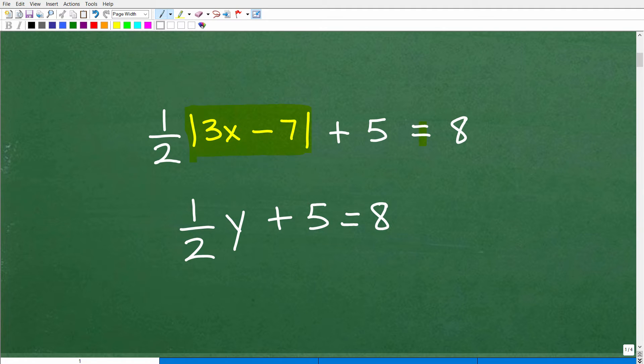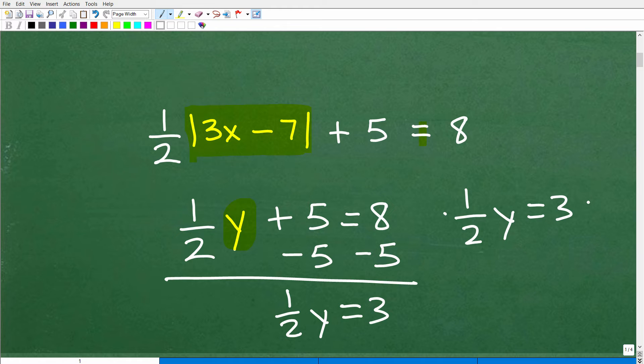So what you want to do here is isolate the Y on one side of the equation. So what would I do? I would subtract 5 from both sides of the equation. That would give me one half Y is equal to 3. And then here, we'll continue right here. One half Y is equal to 3. So to solve for Y, I can multiply both sides of the equation by 2. So Y is equal to 6.